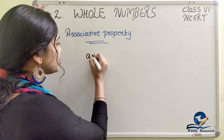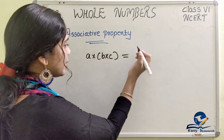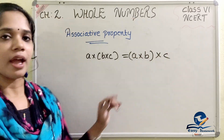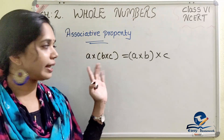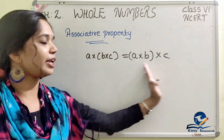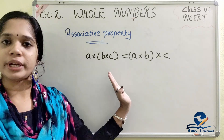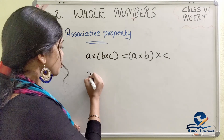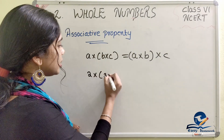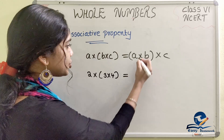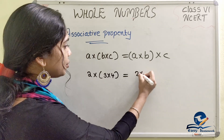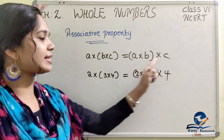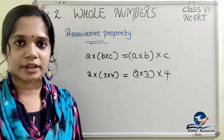A into (B into C) is equal to (A into B) into C. Multiplication is associative for whole numbers. Let's check with numbers: 2 into 3 into 4.